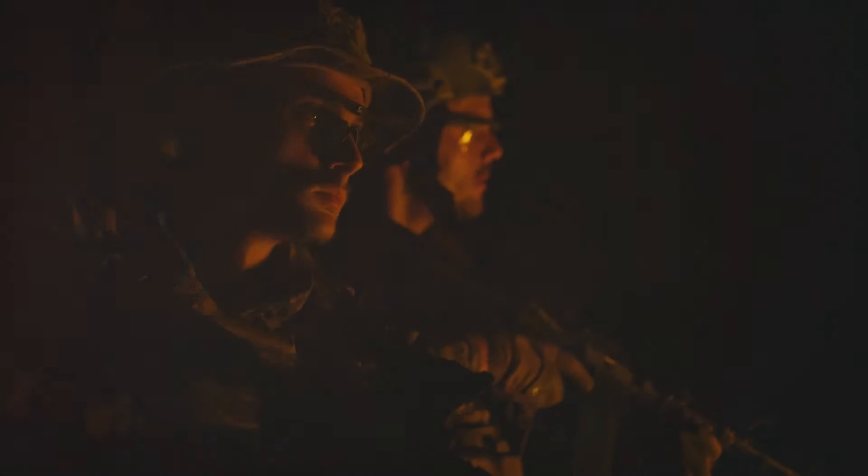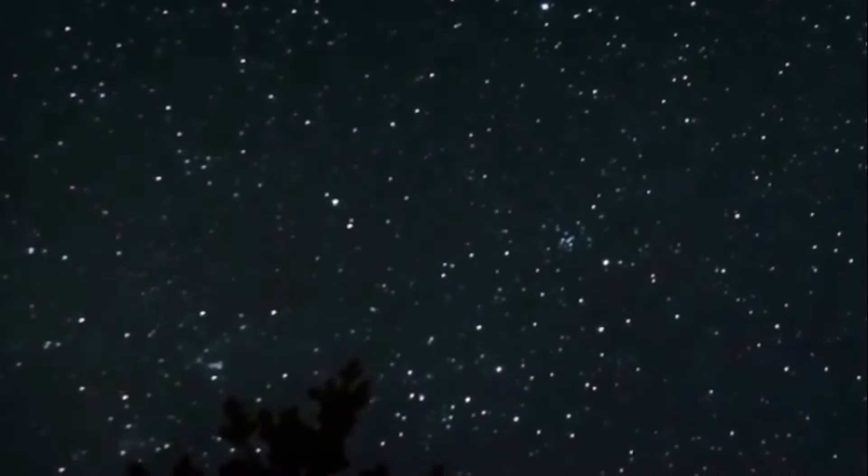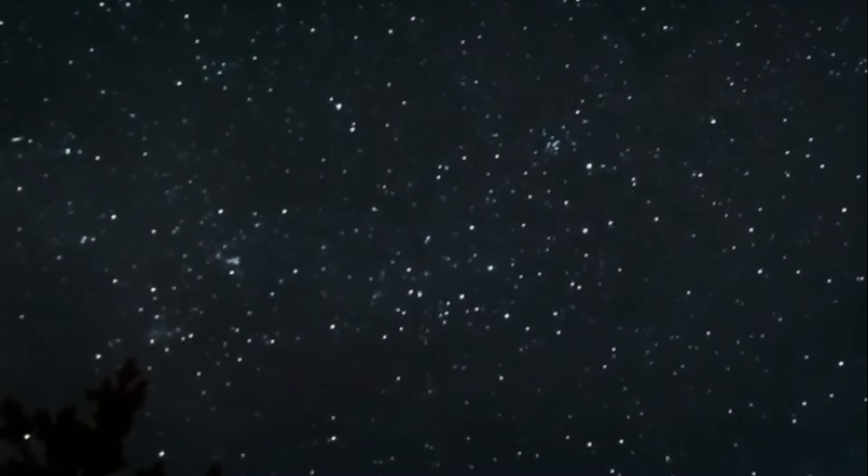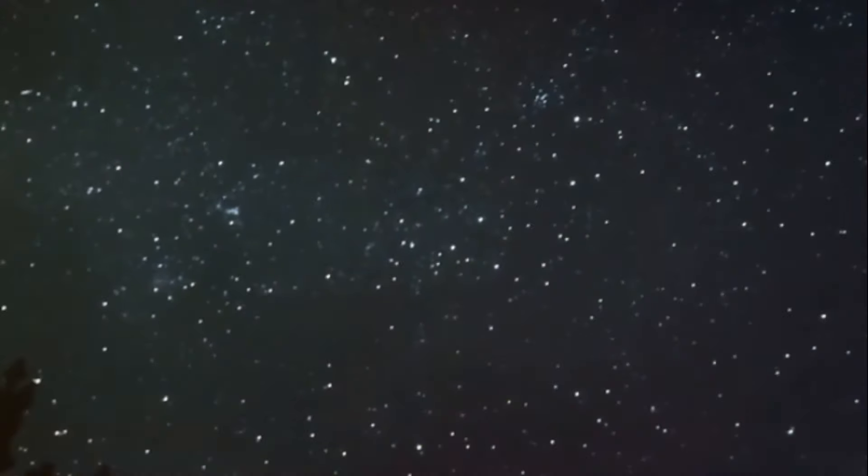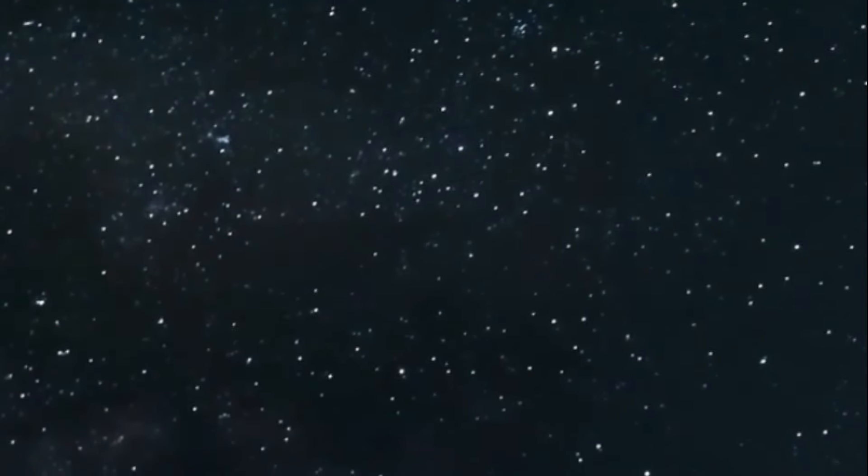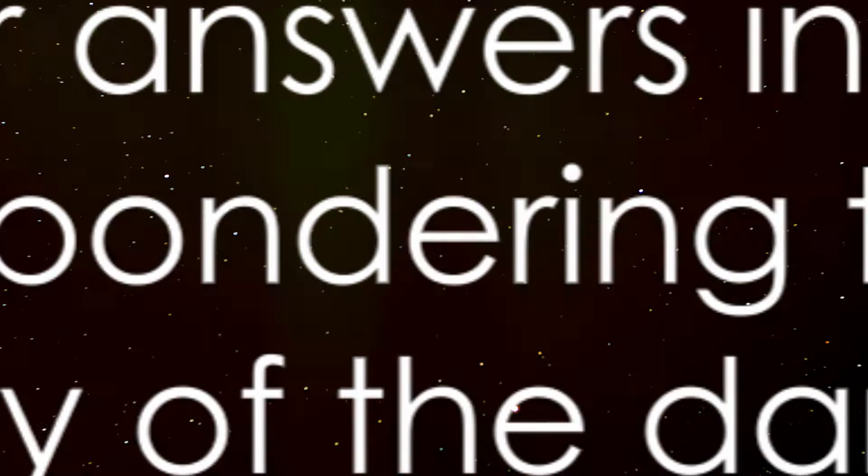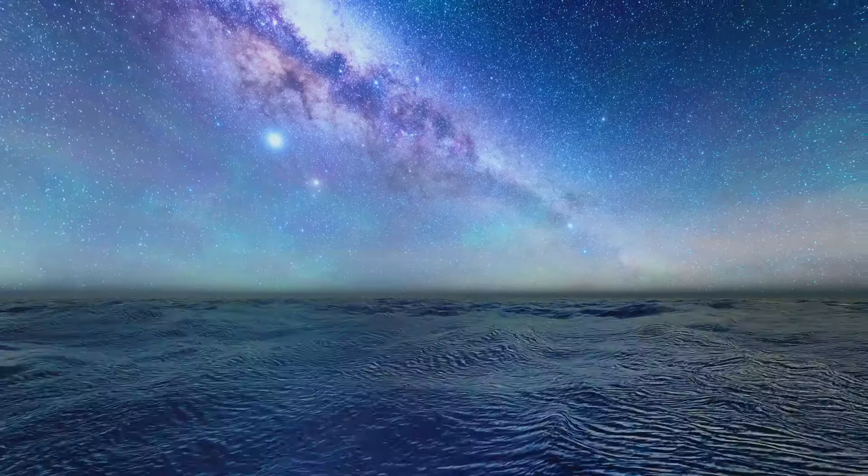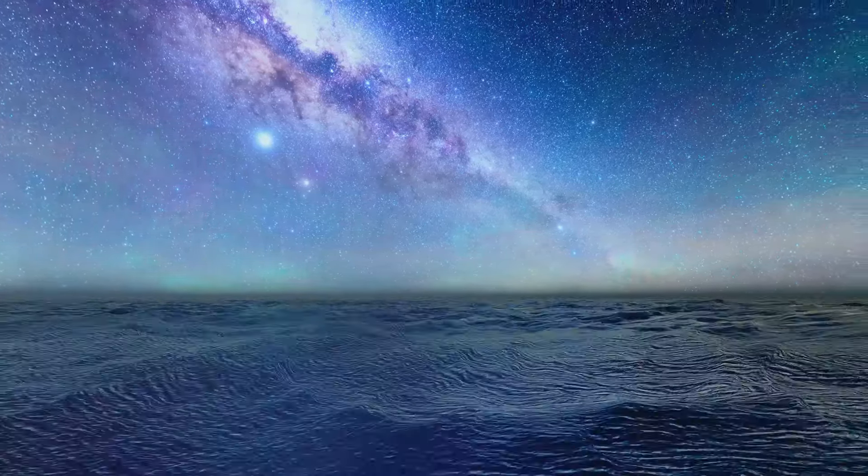So, why is the night sky dark? If the universe is indeed infinite, shouldn't it be flooded with light from an infinite number of stars? It's like having an infinite number of flashlights pointing at you from every direction. You'd be blinded by the light, right? But that's not the case when we gaze at the night sky. The night sky is dark, peppered with only a few bright spots we call stars. This paradox has puzzled astronomers for centuries. It's like a riddle that doesn't seem to have an answer. But science is all about solving riddles, right?